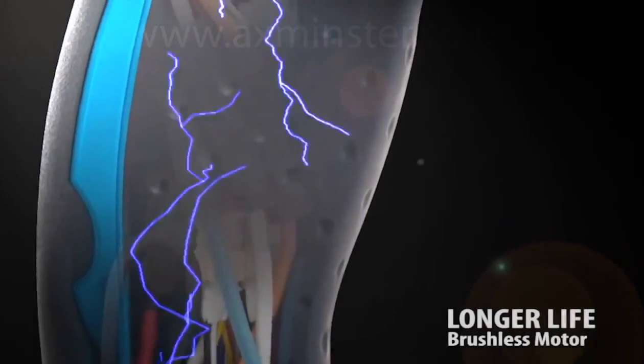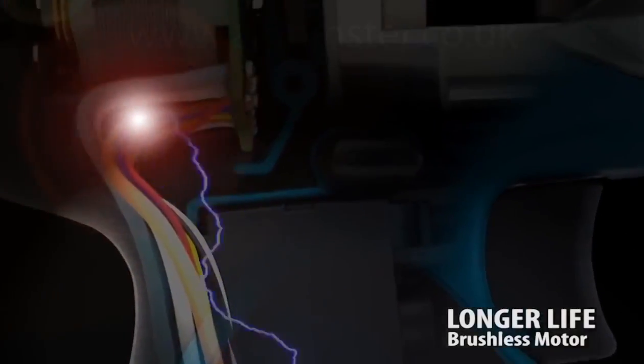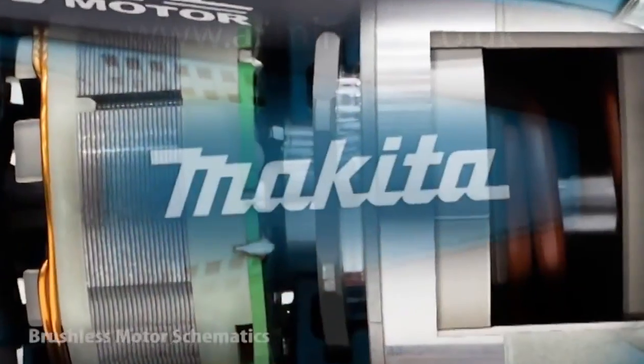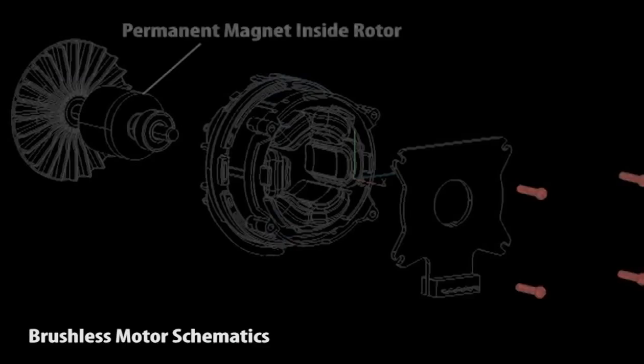The 18-volt LXT lithium-ion battery sends a surge of electricity through the tool's internal controller to power the Makita brushless motor.